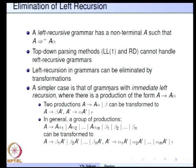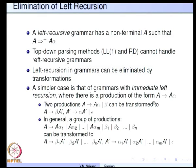For immediate left recursion, we need to handle productions of the form A going to A alpha. Left recursion implies A derives A alpha in one or more applications of productions of A, whereas here the production itself has non-terminal A in the left-most position. If there is a production of the form A going to A alpha, then the grammar is said to have immediate left recursion.